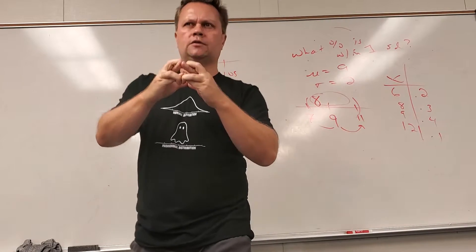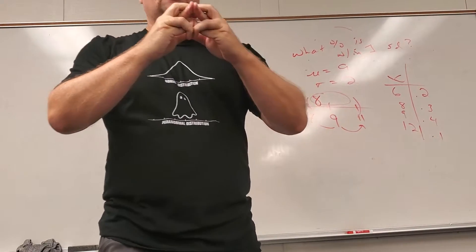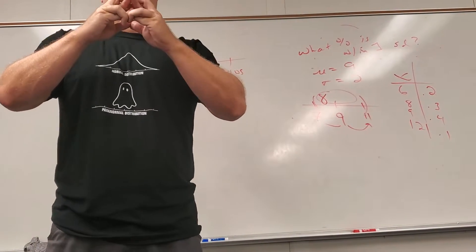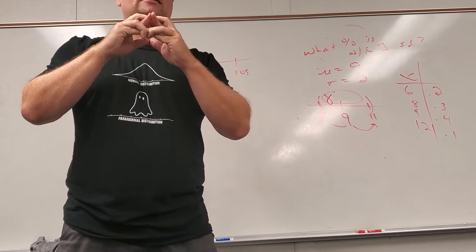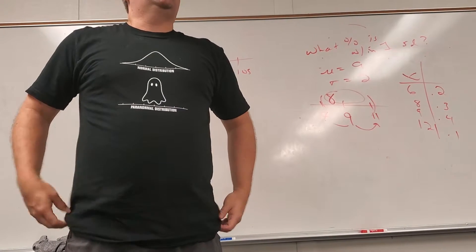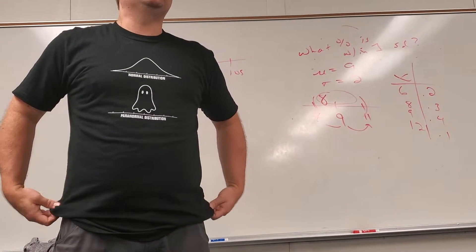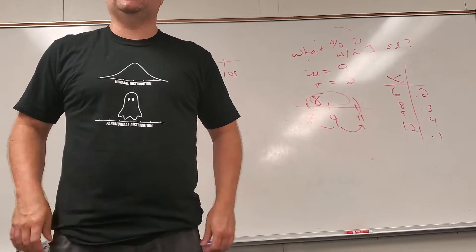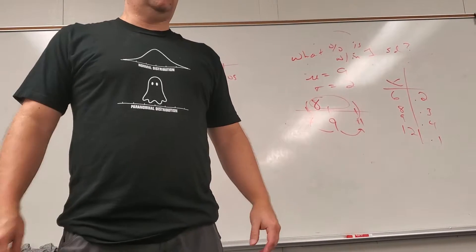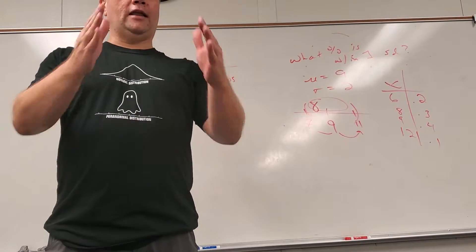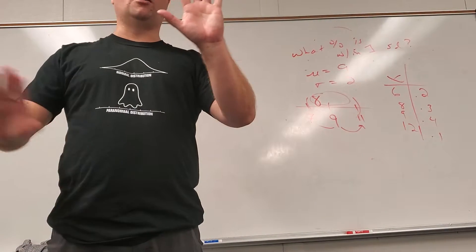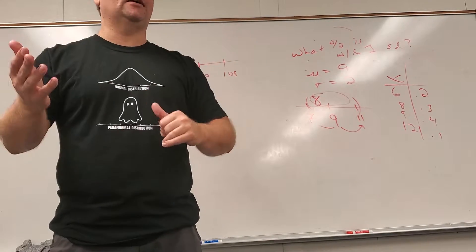Anything else from that quiz? You can make corrections to this quiz — it's due by tomorrow if you want as many points back as you can get. If you've got an 80 or above, you can get 5 points up to 100 max if you do all the corrections and get them all right. So if you've got an 82, you get up to an 87. If you've got a 97, you get up to 100.